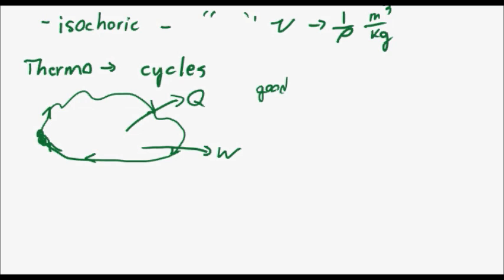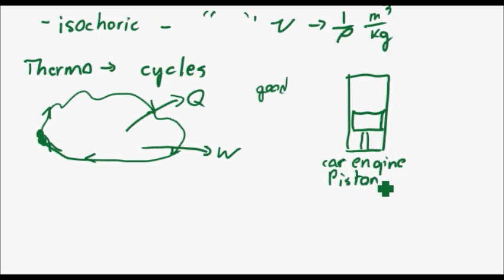So the simplest case I can think of right now is just a car engine. So you have a piston. I know I keep using these simple things but these simple things will help you understand it better. So you have a car engine piston, okay, and what does this piston do?